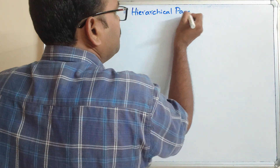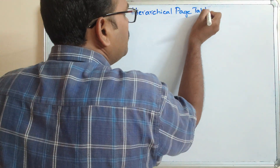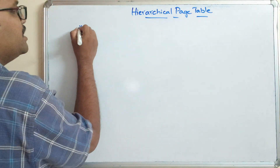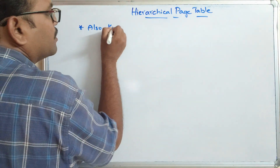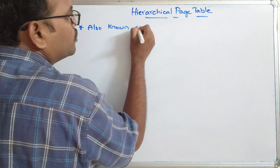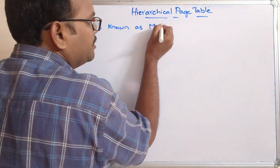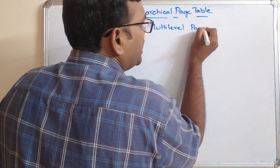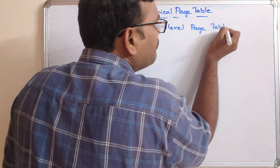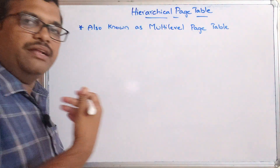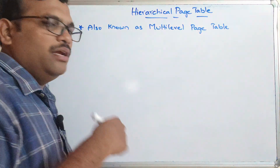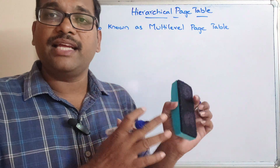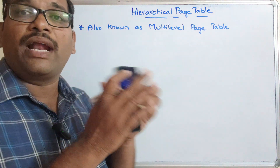Hierarchical page table. This hierarchical page table is also known as multi-level page table. As the name itself indicates, this page table can be represented in different levels — two level, three level, four level. Before going to that, let us see what exactly happens in a one level, that means the basic approach.